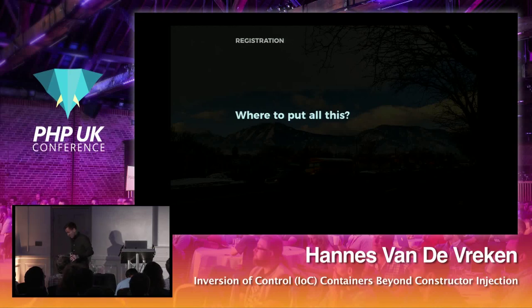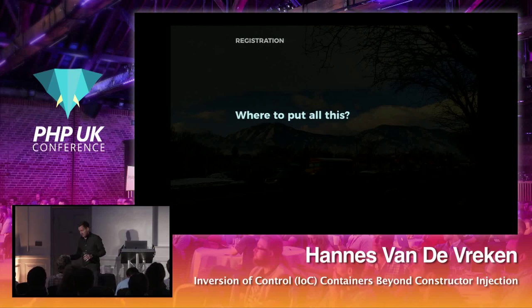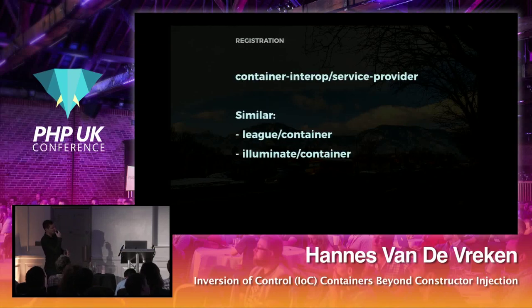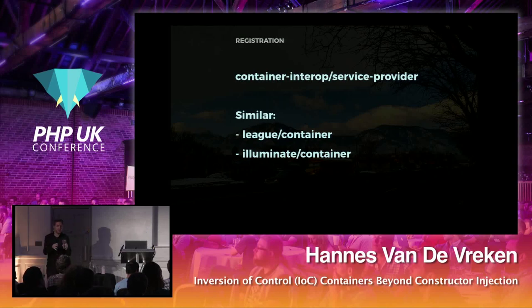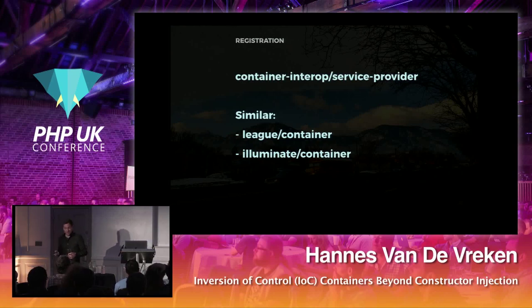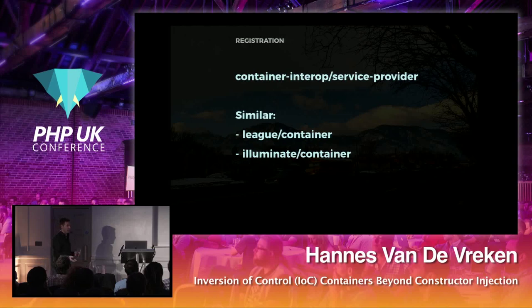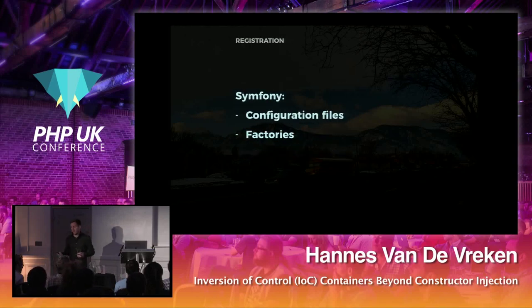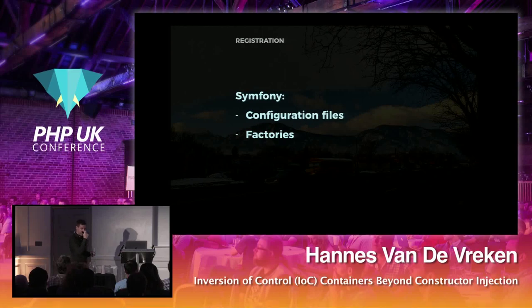Where do you put all this — the aliasing, contextual binding, resolving callbacks, container events? There's a concept called service providers which basically says you put it in the service providers and they tell the container what needs to be resolved and how. There's a similar thing called service provider in League/container. Laravel also has service providers. In Symfony you can do the same thing in configuration files or factories. In Zend you can use factories and config as well. Every project has its own way of telling the container how to resolve something.